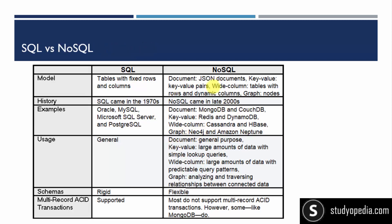So this is what we have shown: document-based, key-value form, wide column form, and graph form in NoSQL — completely different from the conventional SQL. Regarding schemas: SQL is rigid, while NoSQL is flexible. With NoSQL you can store data in different forms — document, key-value, or graph.